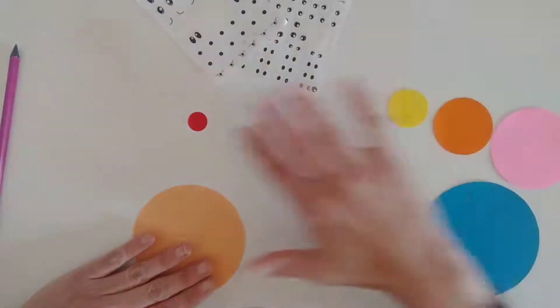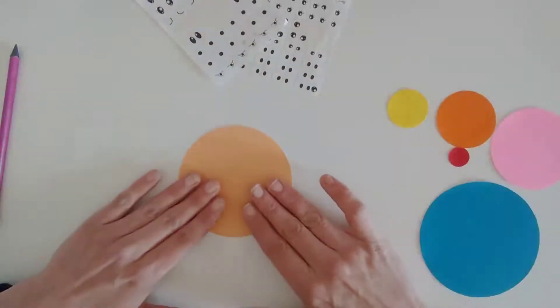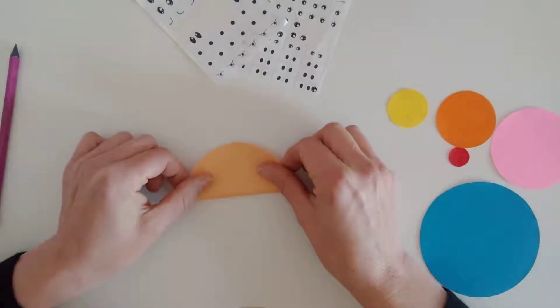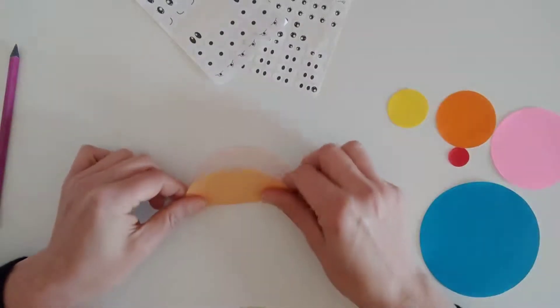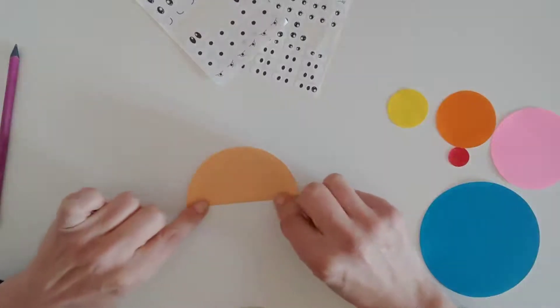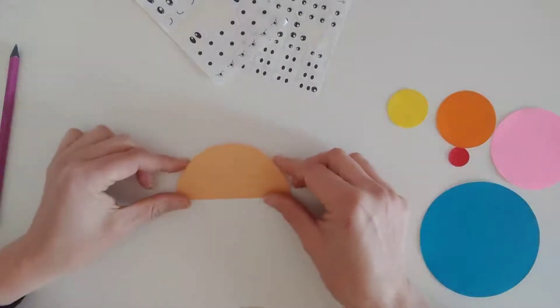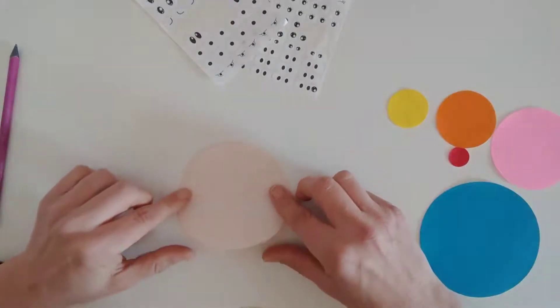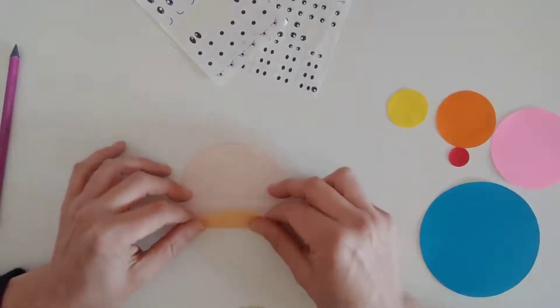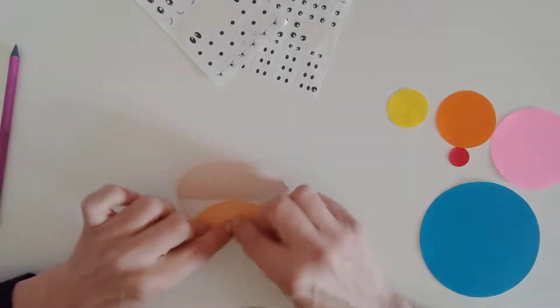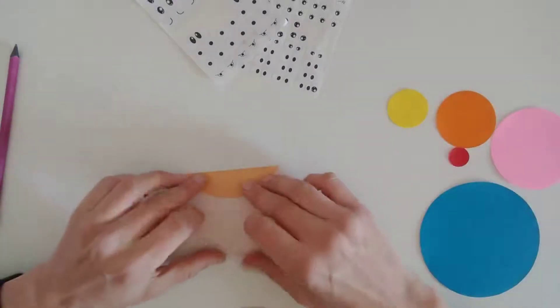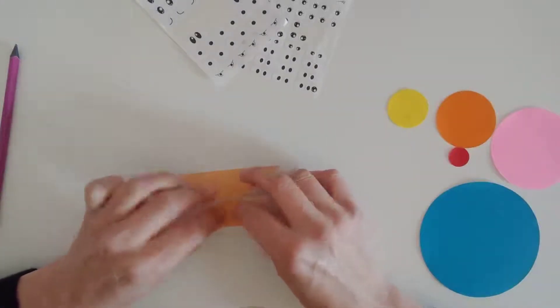First, I take a big circle. Fold in half. Press well. Open it. Fold one side and the other side.